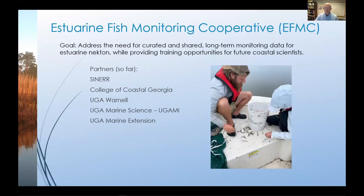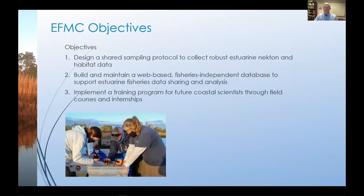Finally, to really improve our understanding of these environmental relationships and improve the quality of our forecasting moving forward, we just need more data. So nearly two years ago, Rachel Guy brought several of us together to form an Estuarine Fish Monitoring Cooperative, with the overall goal to address the need for curated and shared long-term monitoring data for small-bodied estuarine nekton, while also providing training opportunities for future coastal scientists. Partners so far include Sapelo Island National Estuarine Research Reserve, College of Coastal Georgia, UGA Warnell, Marine Science, and Marine Extension. Pursuant to this goal, we are developing a standardized sampling protocol that pools resources among a network of cooperating institutions to meet both sampling and training needs.